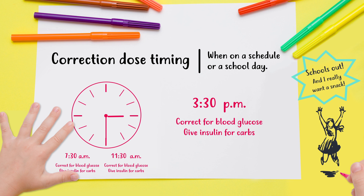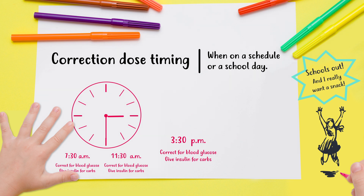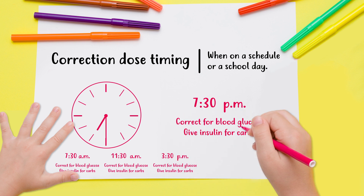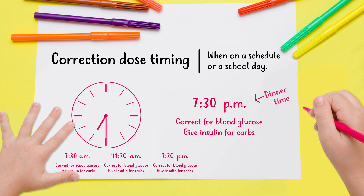At 3:30 p.m., you get home from school and want a snack. It's been more than three hours since your last dose of fast-acting insulin, so dose for your carbs and your glucose if it's high.